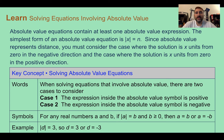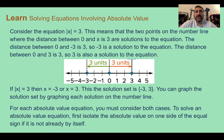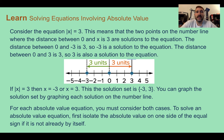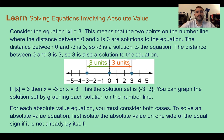When solving, there are two cases to consider: if the number inside the absolute value is positive, and if the number inside is negative. Consider the equation absolute value of x equals 3 — this means two points on the number line where the distance between 0 and x is 3. The distance between 0 and negative 3 is 3, and the distance between 0 and positive 3 is also 3. So if we have the absolute value of a number, we end up with two answers: a positive version and a negative version, which we graph as two points on a number line.